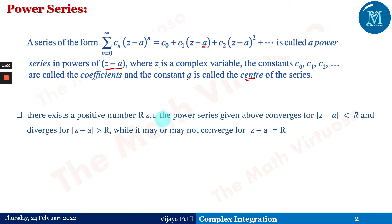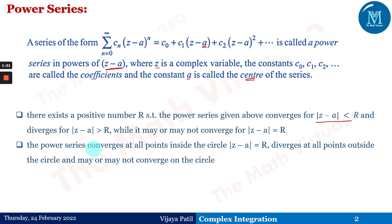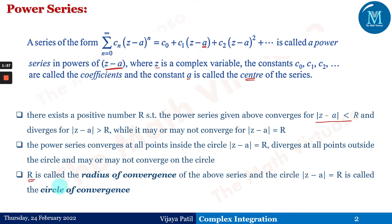There exists a positive number R such that the power series converges for |z minus a| less than R and diverges for |z minus a| greater than R, while it may or may not converge for |z minus a| equal to R. The series converges at all points inside the circle and diverges at all points outside. This R is called the radius of convergence and the circle |z minus a| = R is called the circle of convergence, within which all points are analytic or convergent.